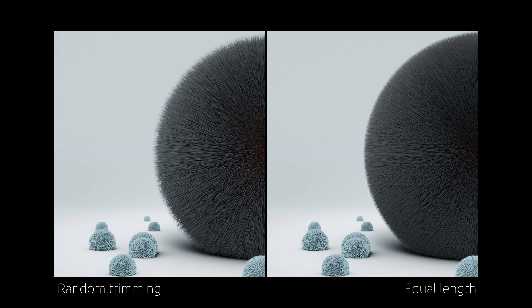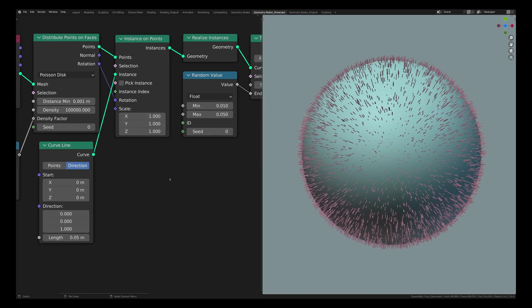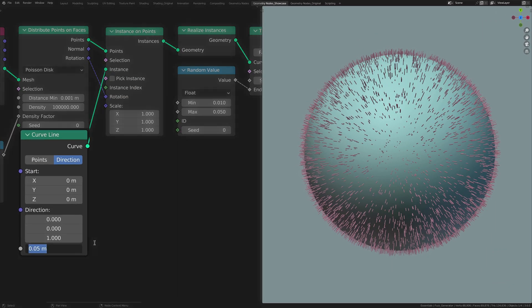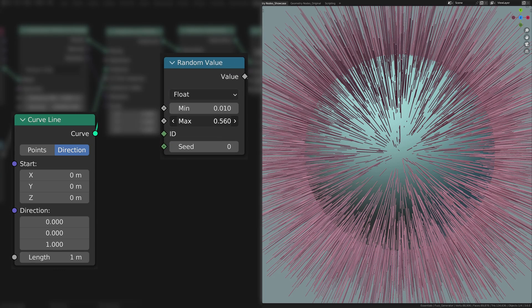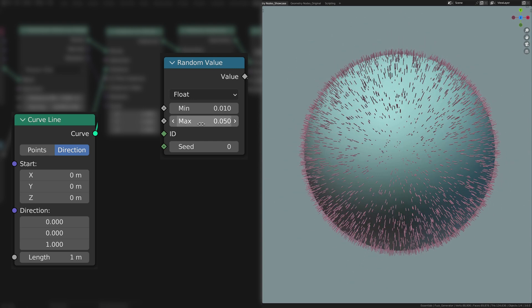If we compare this new trimmed version to the previous untrimmed one, you can see how much more natural it looks. Just remember that if you want to change the length of the strands, first increase their initial length on the curve line node and then tweak the maximum and minimum values on the random value node.